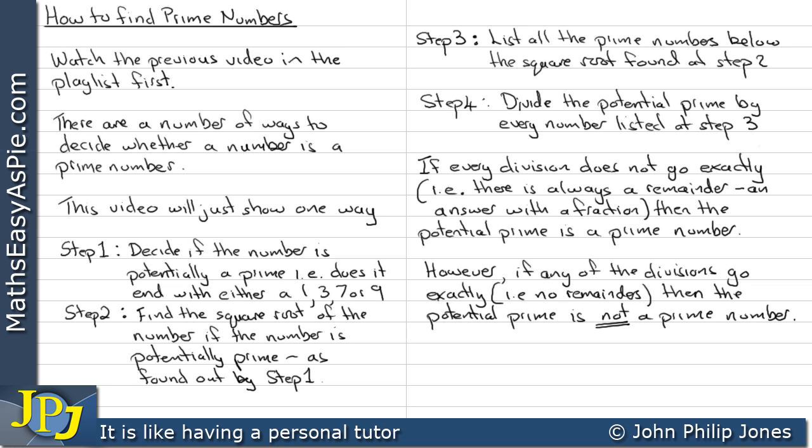Of course the process may never get beyond step 1. For example, if the number you are considering does not end with 1, 3, 7 or 9, then it is not potentially prime. In other words, it's not a prime number. So then there is no point doing steps 2, 3 and 4. You find out immediately at step 1 that the number cannot be a prime number.